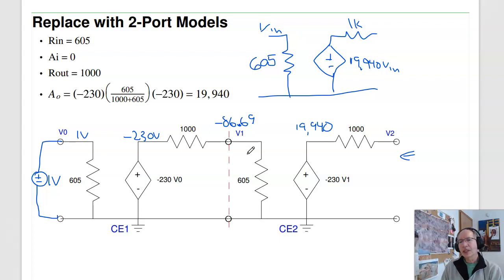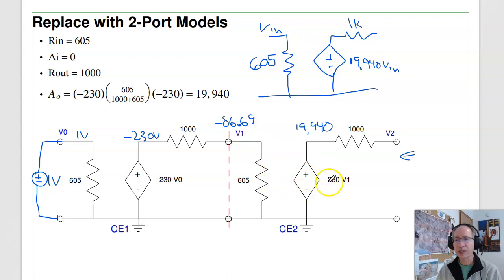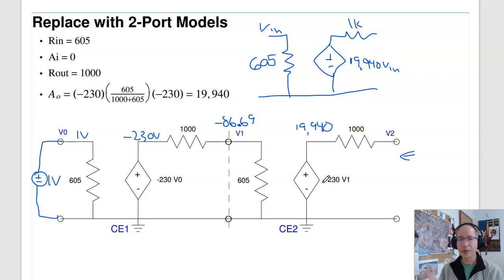The common emitter is kind of the bread-and-butter amplifier. Each common emitter amplifier adds a gain of about 80, so every stage I add keeps amplifying by 80. Eventually the signal will be large enough. So if we have something small, like a radio signal, I can amplify it quite a bit just using common emitter amplifiers. That's your bread-and-butter amplifier.